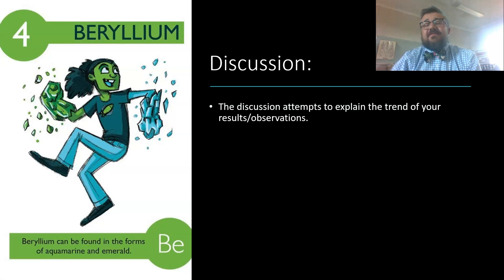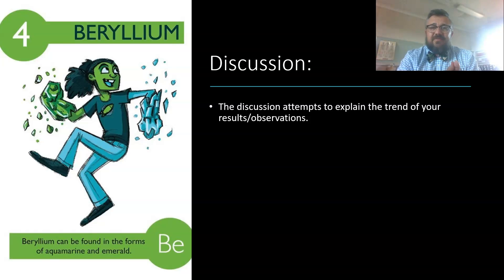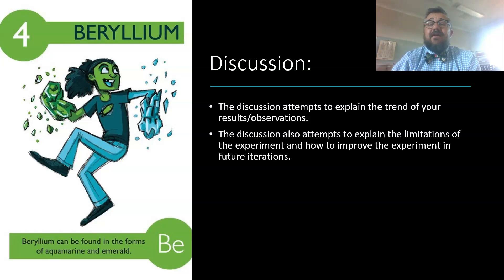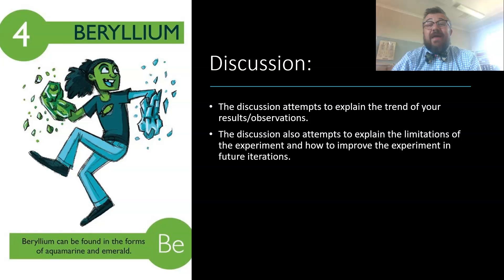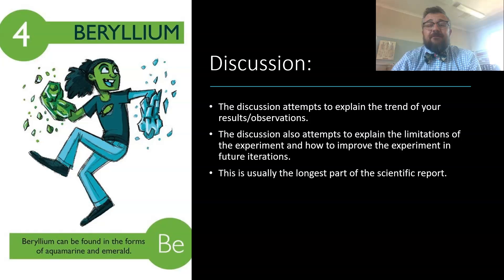So the discussion attempts to explain what we see — not just what we see but why that has happened. We're looking at explaining the trends, and when we do that we're going to talk about the limitations of our experiment — what stops it from being perfect. We also want to know how to improve the experiment for future iterations, and that's why this is usually the longest part of the report.